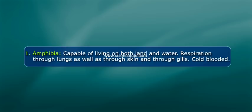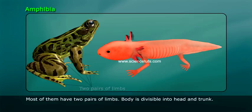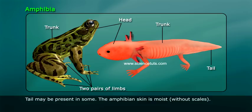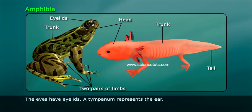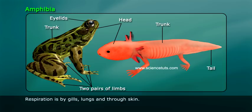Amphibia are capable of living on both land and water. Respiration occurs through lungs, skin, and gills. They are cold-blooded. The name comes from the Greek words 'amphi' meaning dual and 'bios' meaning life. Most have two pairs of limbs; the body is divisible into head and trunk, and a tail may be present in some. The skin is moist without scales, eyes have eyelids, and a tympanum represents the ear. The alimentary canal, urinary, and reproductive tracts open into a common chamber called the cloaca, which opens to the exterior.